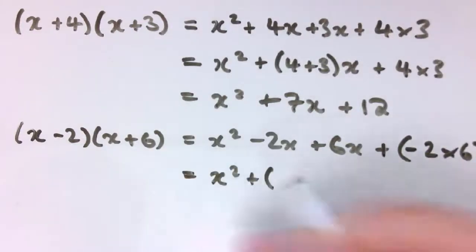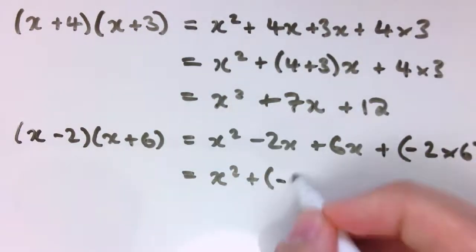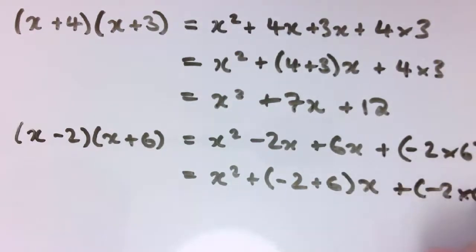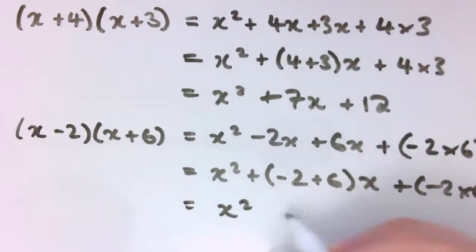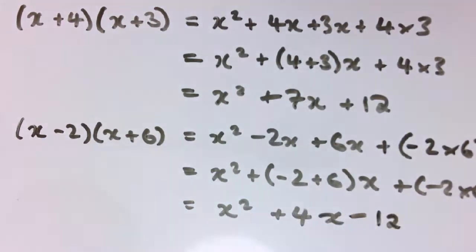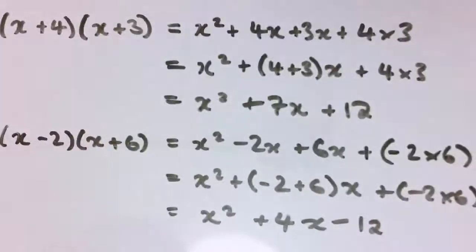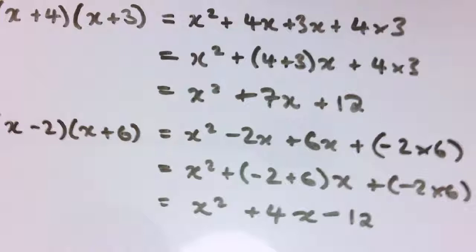So again I've got x squared and I can think of this as being adding on minus 2 plus 6 lots of x and plus minus 2 times 6. So that's x squared plus 4x minus 12. But again these two numbers, minus 2 and 6, are our key because I've got minus 2 plus 6 here to give 4 and minus 2 times 6 to give minus 12.